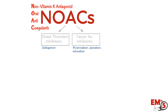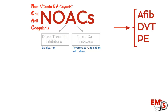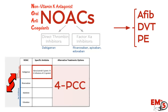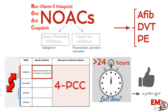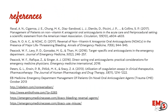Let's review. NOACs are an oral anticoagulant option that is an alternative to coumadin. The two categories are the direct thrombin inhibitors and the factor Xa inhibitors, used for AFib, DVT, and PE. If we need to reverse them for life-threatening bleed, dabigatran has an antidote — idarucizumab. For everything else, we do our best and try to give 4-factor PCC. Remember to ask when the last dose was — if it's more than 24 hours, there's probably no further anticoagulant effect in the system.